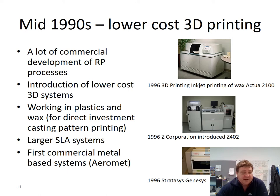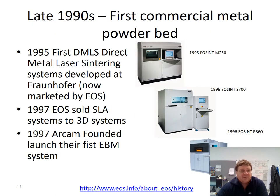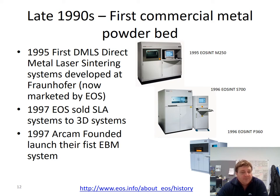Focusing on getting larger SLA systems, there was also a first attempt at some metal-based systems — such as AeroMet, though we don't see them so much now. EOS produced the first direct metal laser sintering at Fraunhofer, now marketed by EOS — producing the EOS M250 in 1995, the S700 in 1996, and the P360 in 1996 as well. EOS then sold their SLA systems to focus mainly on metal-based systems, and ARCAM founded their first electron beam melting system.